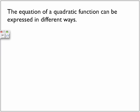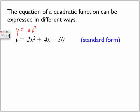Now, the equation of a quadratic function can be expressed in different ways. So let's look at three different ways in which we might see a parabola written in our notes or in our textbook as follows. Y is equal to 2x squared plus 4x minus 30. This is what we call standard form, and standard form is any parabola that is written in the form of Y is equal to ax squared plus a bx plus a constant, a c value.